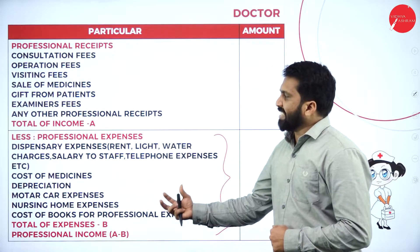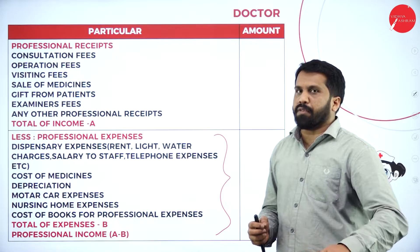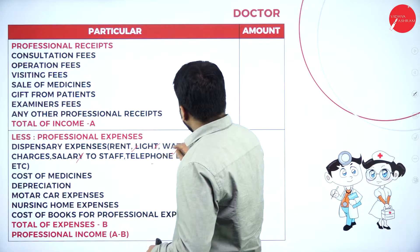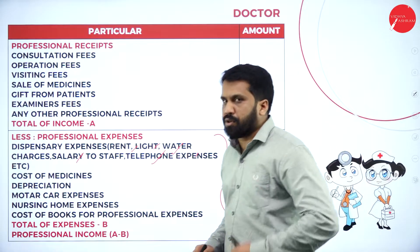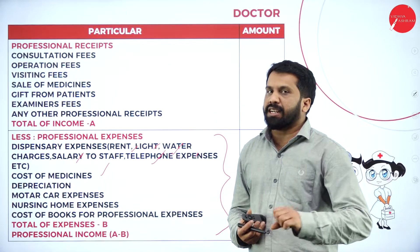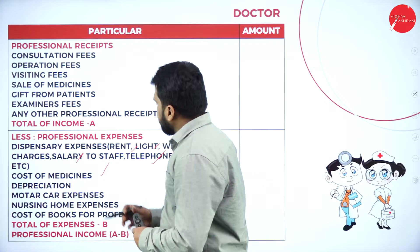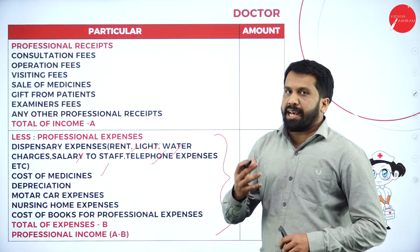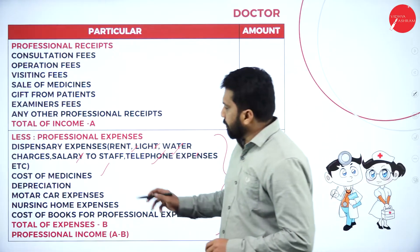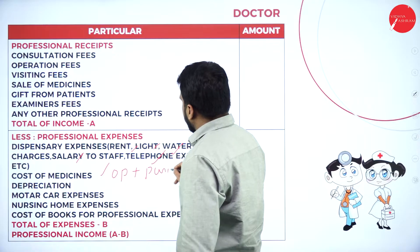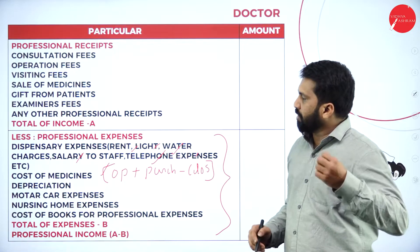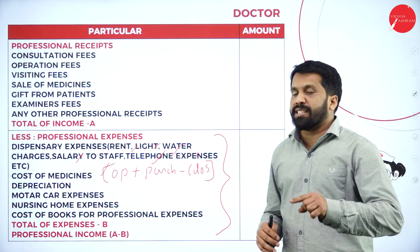You know the format of expenses — expenses are common in all professions because you have to pay rent, light, water, salary, telephone expenses. Along with it, the new thing is cost of medicine. Cost of medicine will not come under your profession of chartered accountant and profession of lawyer, but here we have cost of medicine. Remember, in the cost of medicine adjustment, if they have given opening and closing: opening medical plus purchase of medical minus closing medical.